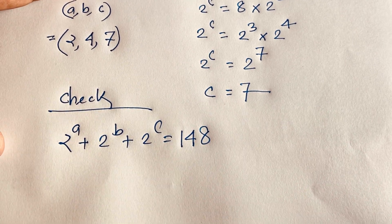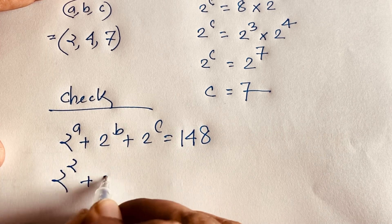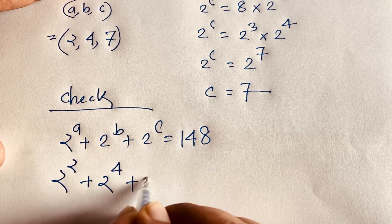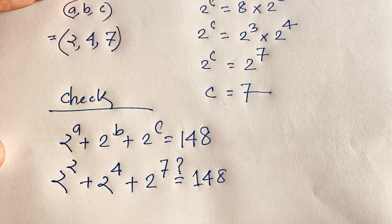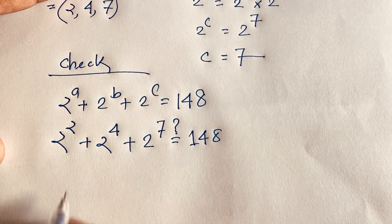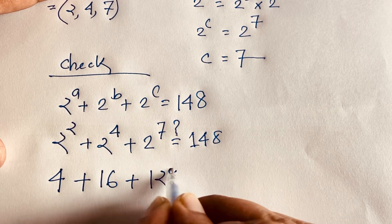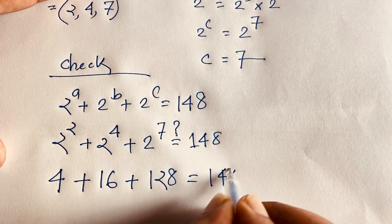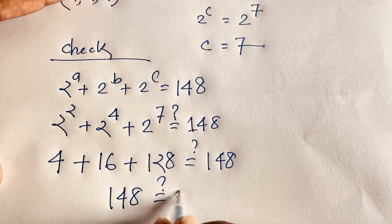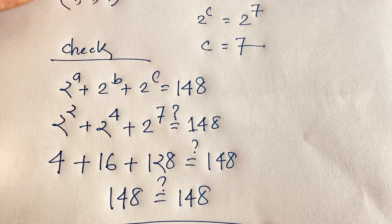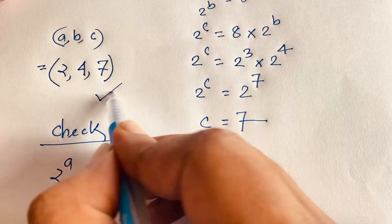It is an interesting Math Olympiad question. So 2^a is 2, 2^b is 4, 2^c is 7. Now 2^2 is 4, 2^4 is 16, and 2^7 is 128, and 4 plus 16 plus 128 equals 148. So a, b, c is 2, 4, 7, making abc equal to 247. This is our final answer.